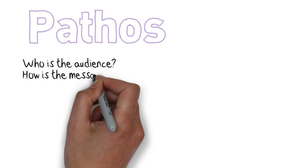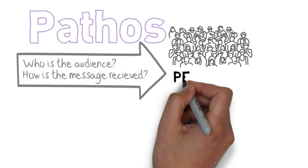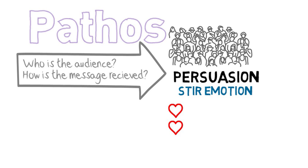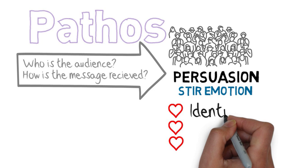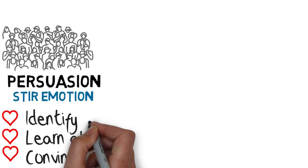So let's talk now about pathos. Who is the audience? And how is the message received by the audience? Persuasion can come through the audience when the speech stirs emotion in the audience. Something persuades me when it arouses my emotions, when it speaks to my heart. Here we'll see a three-step process: identify the audience, learn about the audience, and then convince the audience.